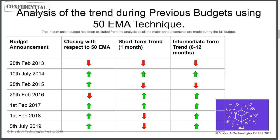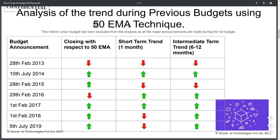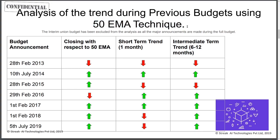Let's first analyze with trend how the previous budgets have performed using the 50 EMA technique. This is a very standard approach where people look at the 50-day exponential moving average and check whether the trend is bullish or bearish. If the closing price is above the 50-day moving average, it is considered a bullish trend. If it is below, it is considered a bearish trend.